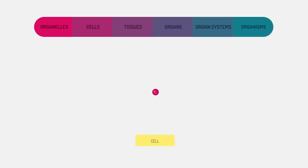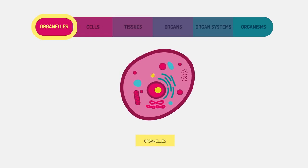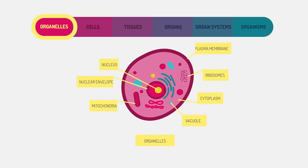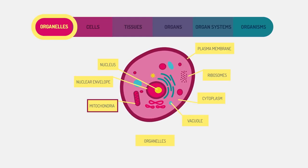Inside cells are little organelles. These are specialized structures that carry out particular jobs or functions. Like in this animal cell, the mitochondria provides energy to the cell, and the ribosomes are involved in protein synthesis.